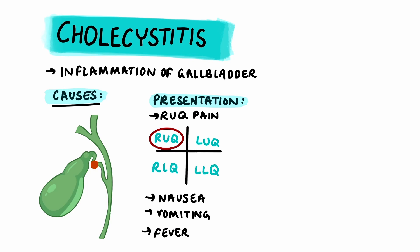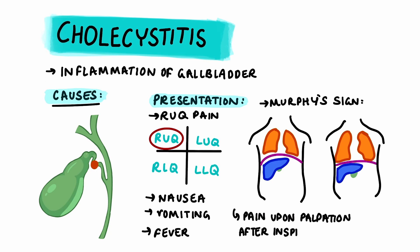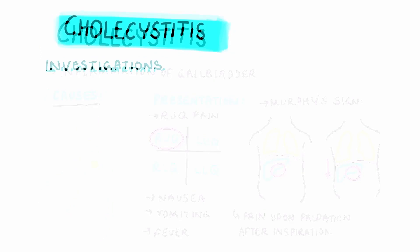Most importantly we should be aware of the Murphy's sign. This is a common exam question and is suggestive of cholecystitis. It's performed by pressing on the patient's right upper quadrant then asking them to take a deep breath in. Since the diaphragm flattens during inspiration it can cause the gallbladder to descend, allowing contact with the gallbladder. Due to inflammation this causes increased pain, making the patient suddenly catch their breath.